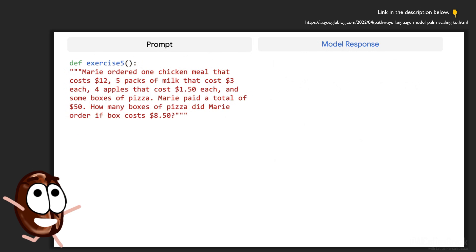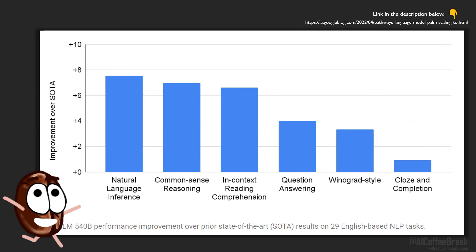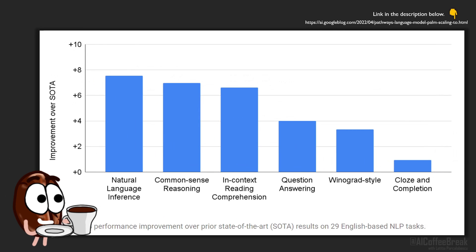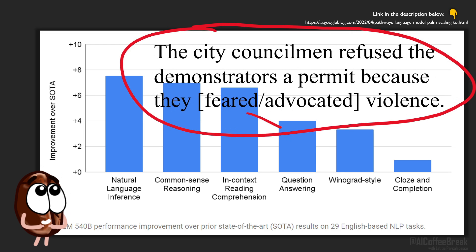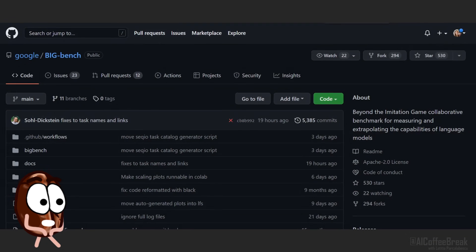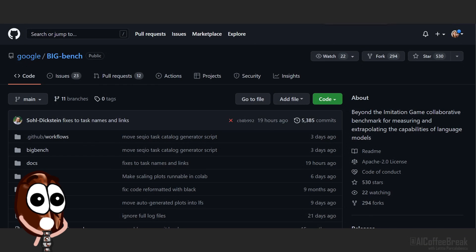On natural language, PaLM improves state-of-the-art on common benchmarks like natural language inference — where one has to say whether a sentence entails or contradicts another — reading comprehension, question answering, and even on the complicated Winograd-style schemas, and so on. But we did not even get to the jaw-dropping part yet.